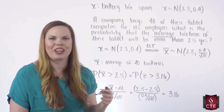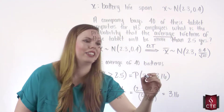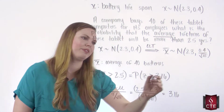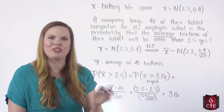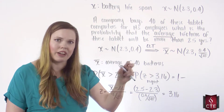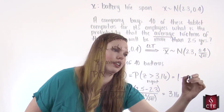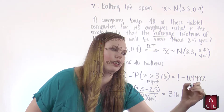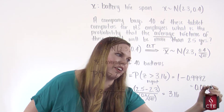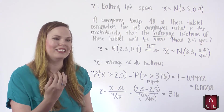We're looking for the area greater than 3.16, which is the area to the right. The table gives the area to the left, so we do 1 minus the value we look up. Looking up 3.16 in the table gives 0.9992, and doing the subtraction gives 0.0008 — a very small probability. That's how you use the central limit theorem in a normal distribution problem.